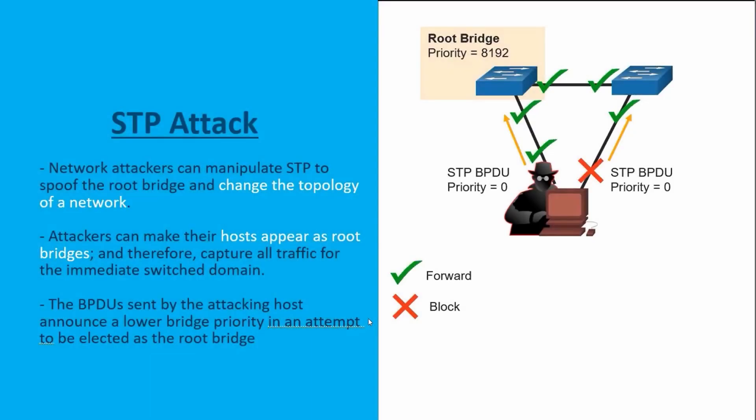Spanning Tree is a protocol that is on by default on our Cisco switches. Its job is to provide redundant connections while maintaining loop-free pathways. But the problem is threat actors can utilize Spanning Tree to actually change the topology of your network infrastructure, making their host appear as a root bridge — not based on physical connections, but logical ones.